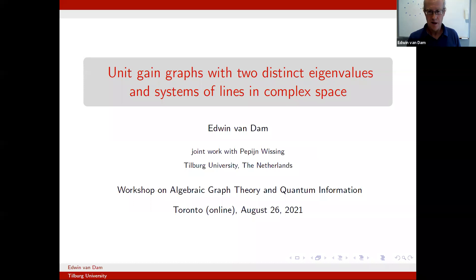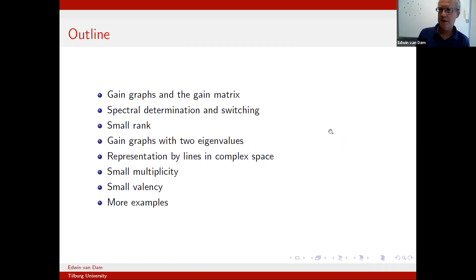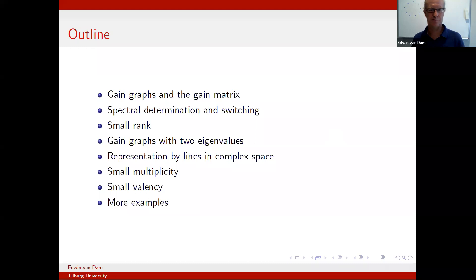Let me give an outline first. I'll talk about gain graphs and explain what these are. There is a gain matrix involved which is more general than the adjacency matrix we're used to for usual graphs. We'll talk about spectral characterizations of such graphs, and there's switching involved. Then I'll discuss gain graphs with small rank, then gain graphs with two eigenvalues.